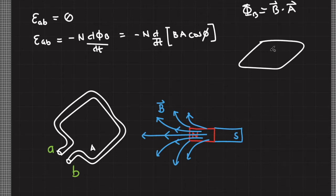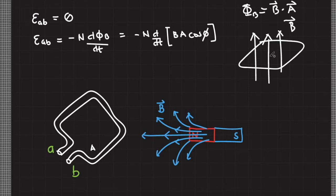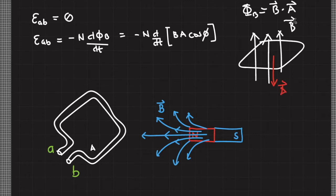For example, if initially the external magnetic field passing through the current loop points in one direction and your area vector for this current loop points in the same direction, then their dot product will lead to a positive magnetic flux. Otherwise, if the chosen area vector is anti-parallel with the external magnetic field, then your magnetic flux is negative. So the sign of magnetic flux is dependent on your chosen area vector.